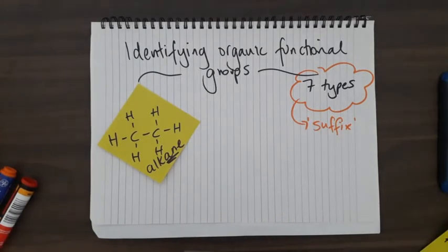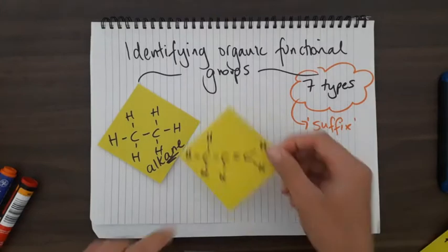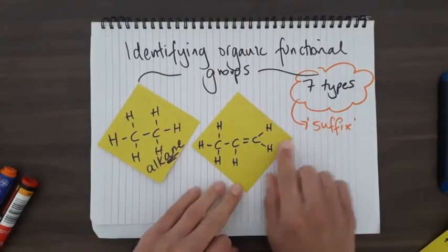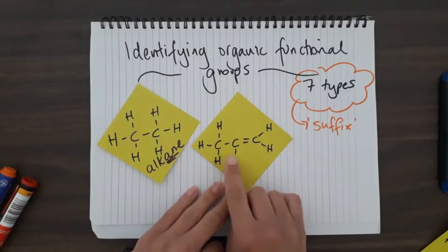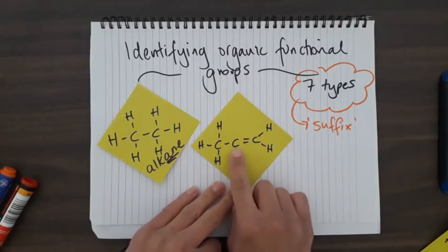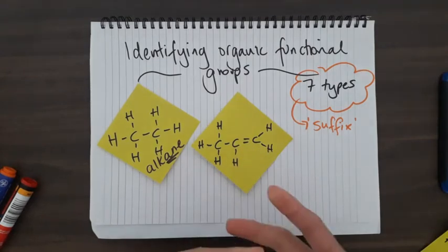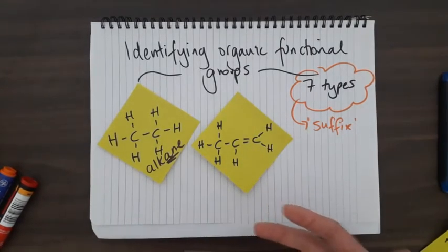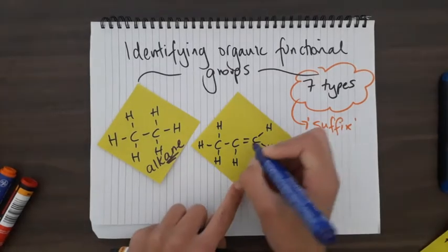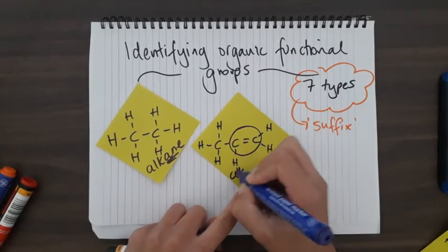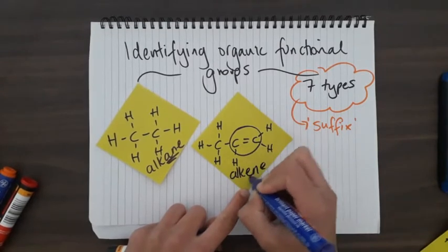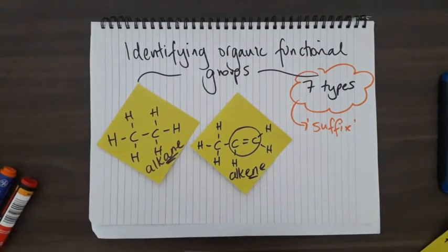If we compare it to something like this, it's also just got carbons and hydrogens, but you'll see here that they're not just single bonds - there's a double bond here between two carbons. This is also a hydrocarbon, but because of the double bond, this is an alkene. The name of a molecule that has a double bond should have the suffix -ene in it.